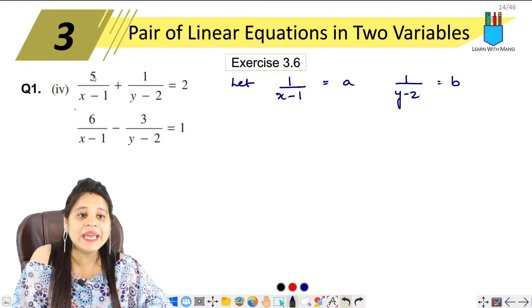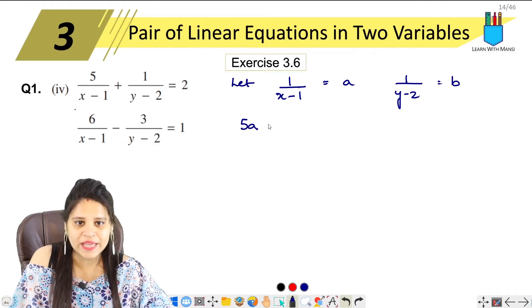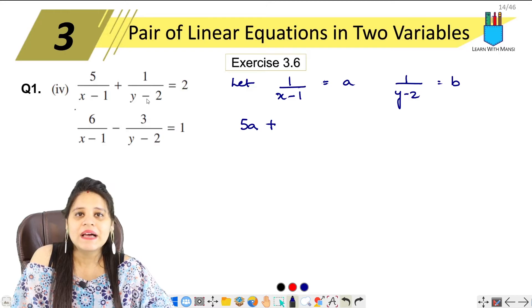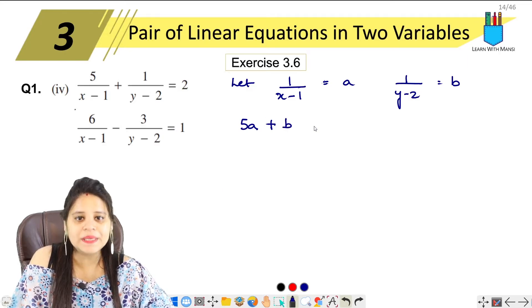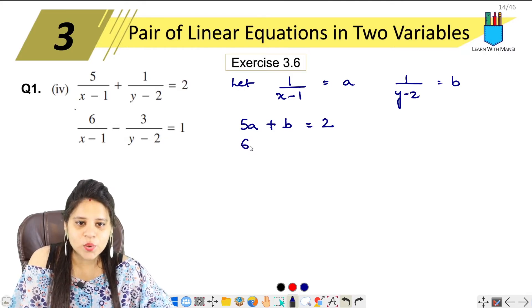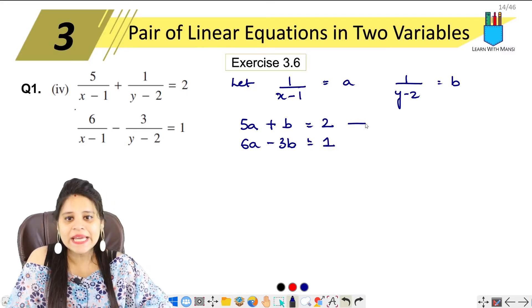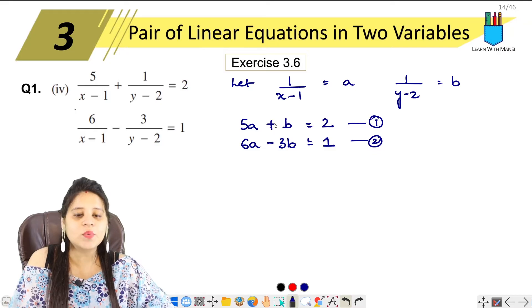What will we get? 5a plus b will be equal to 2. Here we are going to start with 6a minus 3b equals to 1. This is the first equation. This is the second equation.